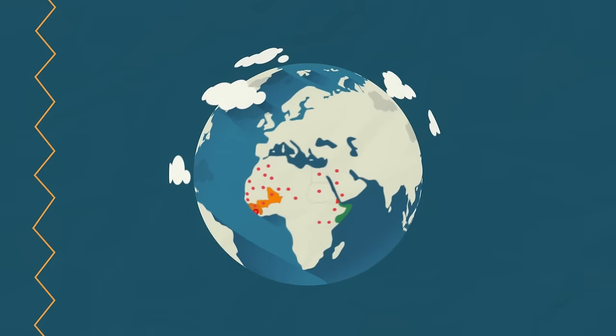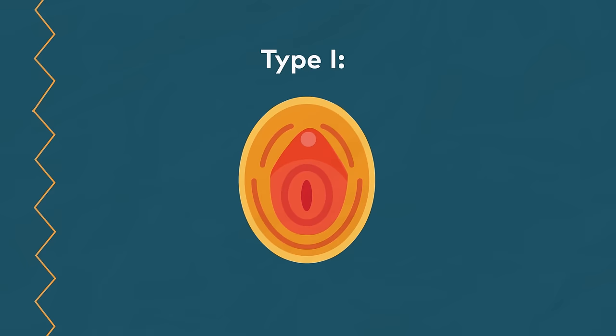There are four types of FGM. Type 1, clitoridectomy, meaning removal of the clitoris. Type 2, excision, meaning removal of the clitoris and the labia.